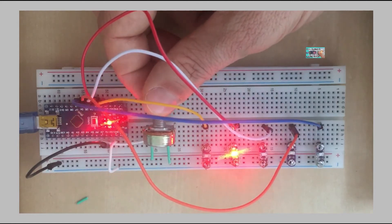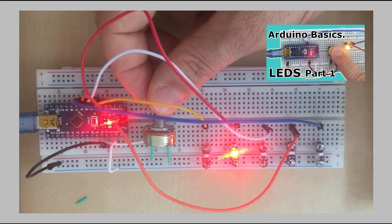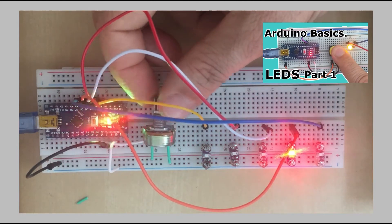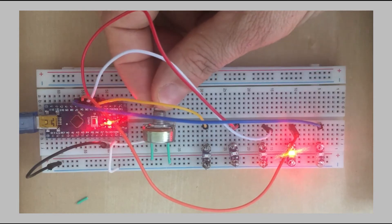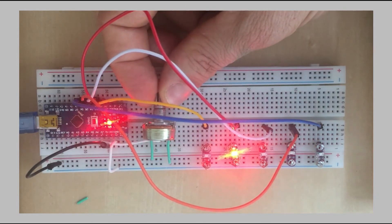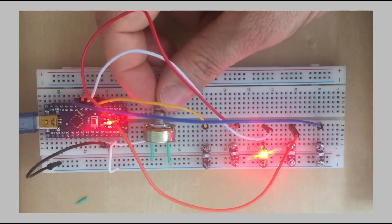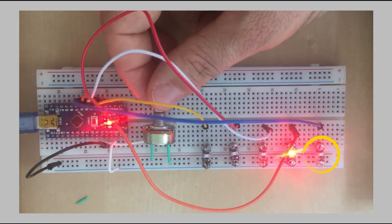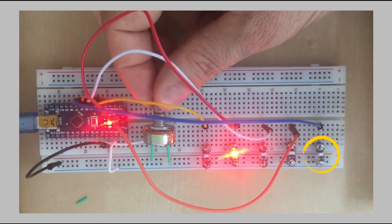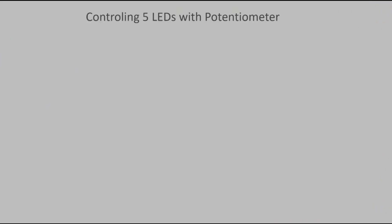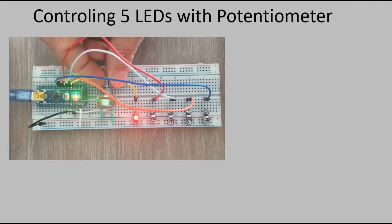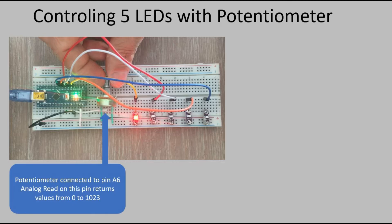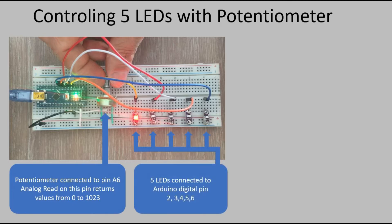A while ago I posted a video with simple LED projects. One of them was to control five LEDs with a potentiometer. In this project I came across a problem — one of the LEDs would not cooperate for unknown reason. I thought I had set up everything perfectly. The potentiometer was connected to pin A6, and five LEDs were connected to pins 2 through 6.